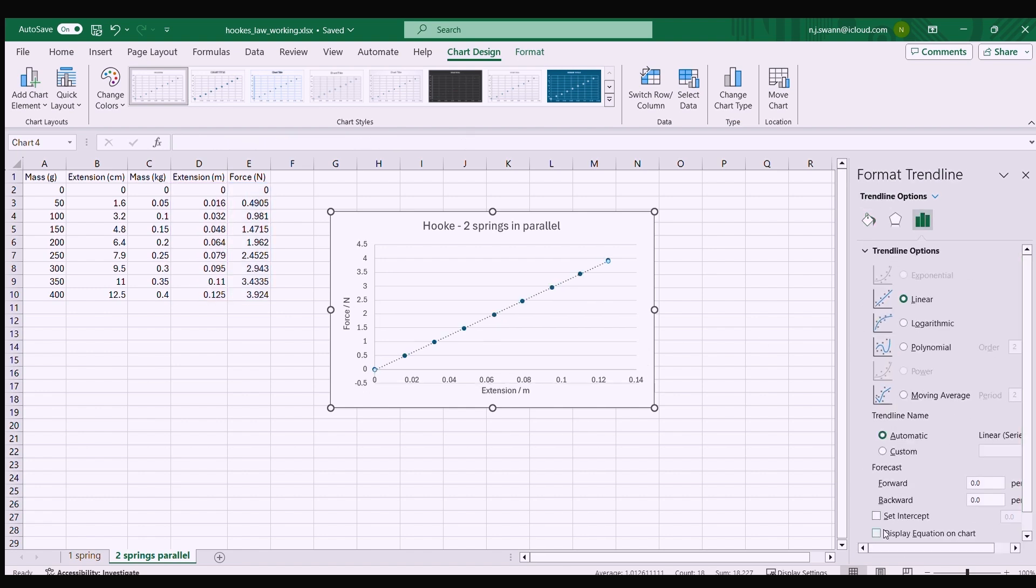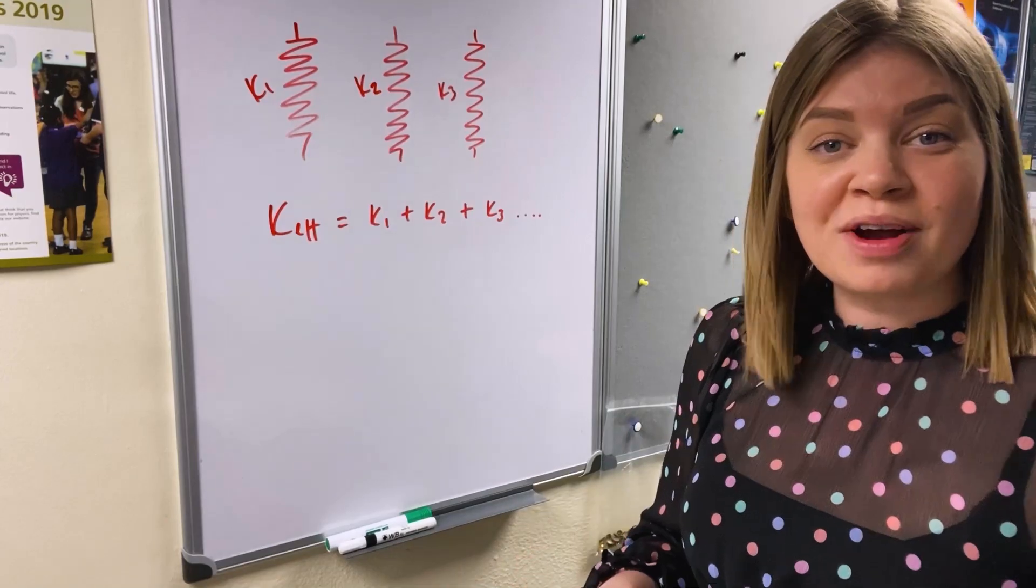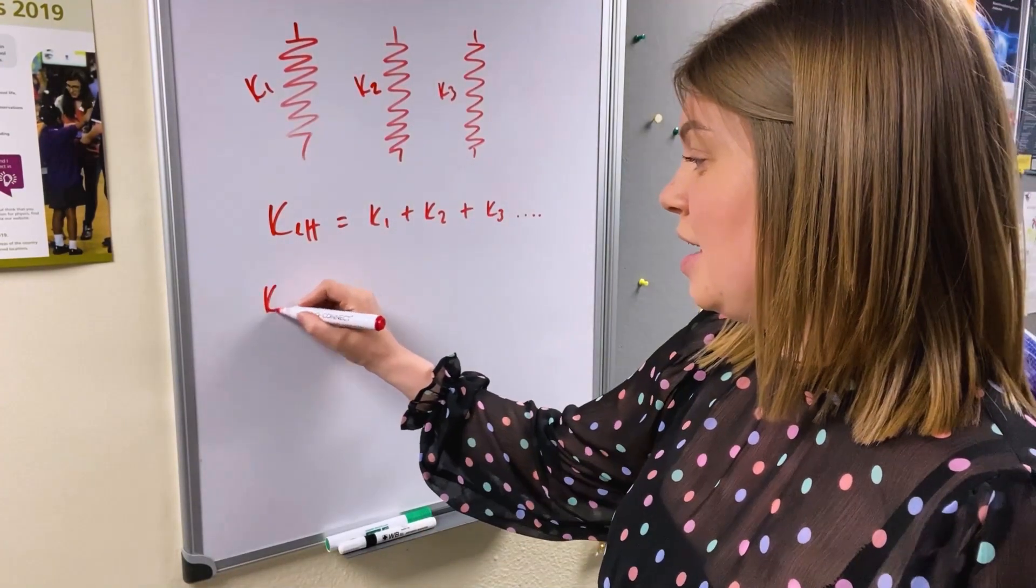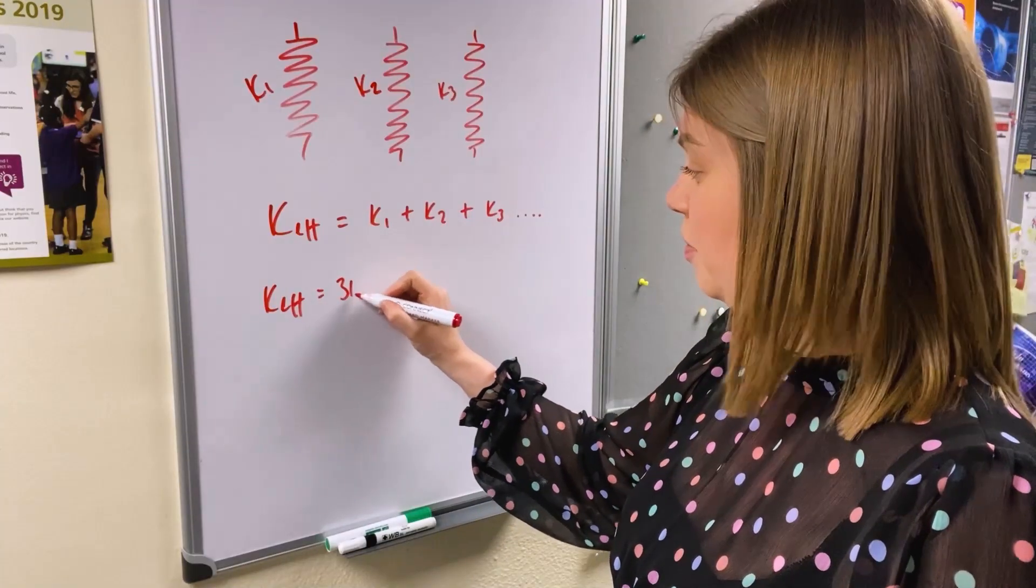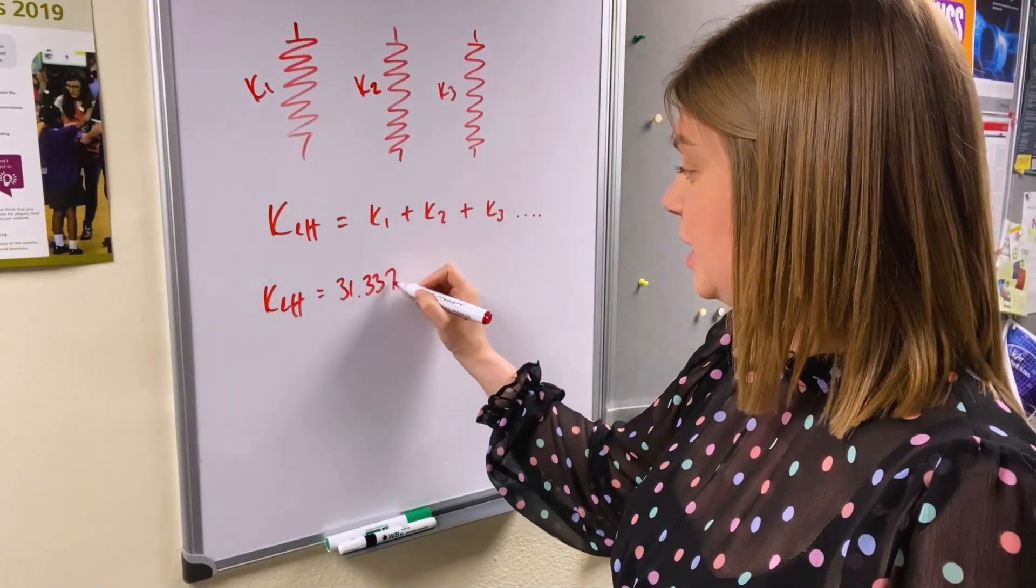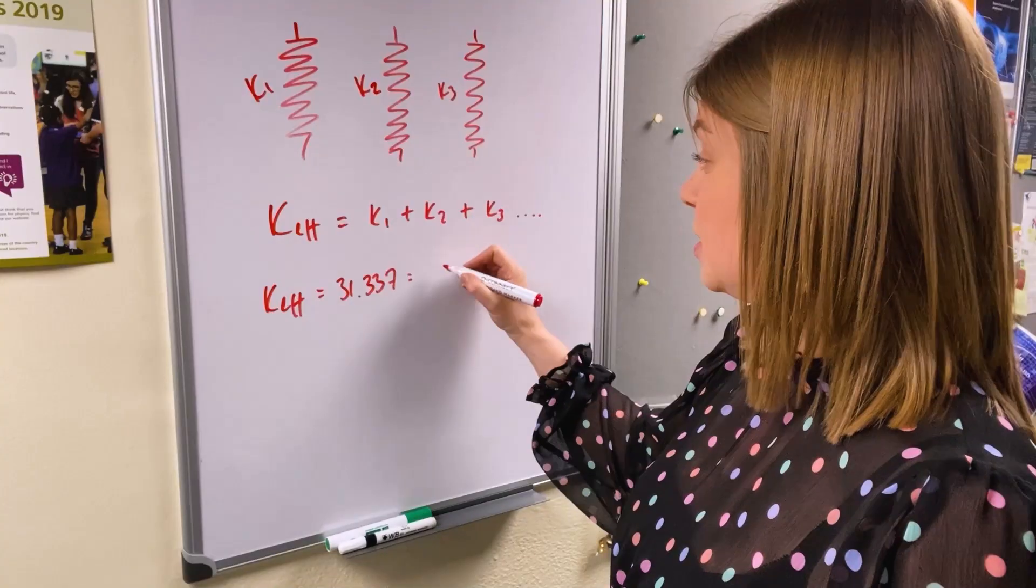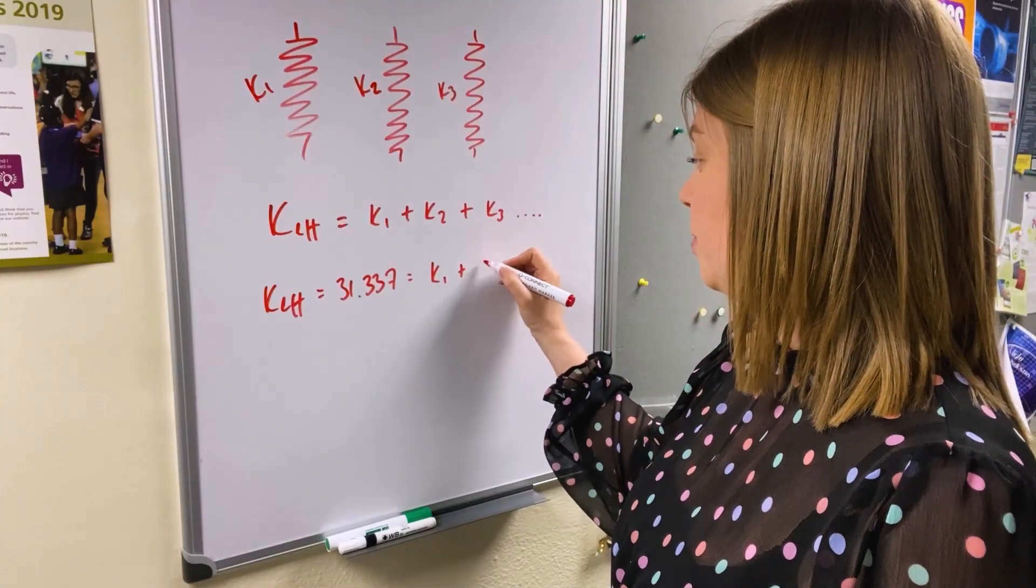That gives us a total effective spring constant of 31.337. From our graph we have worked out that Keff, the effective spring constant, is 31.337 and that's for two springs so we know that is equal to K1 plus K2.